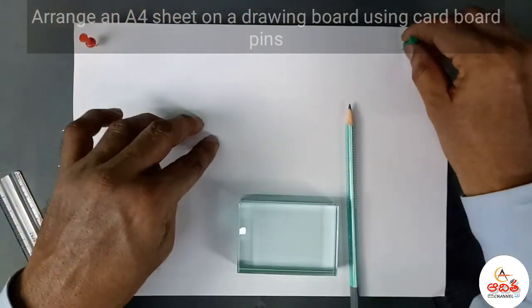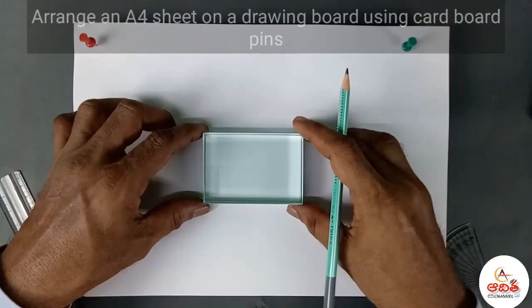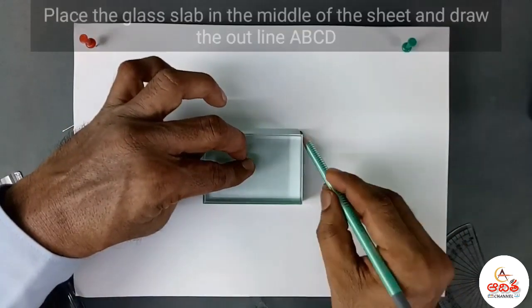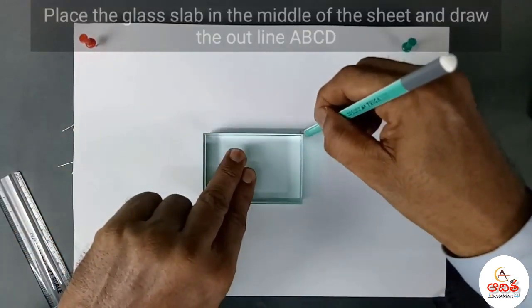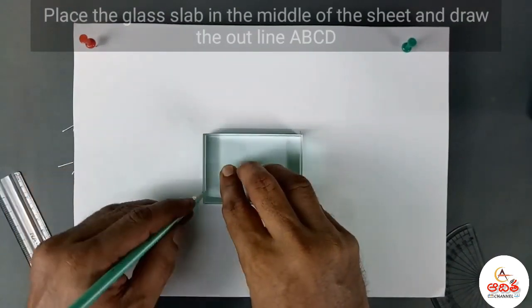Arrange an A4 sheet or a drawing board using cardboard pins. Place the glass slab in the middle of the sheet and draw the outline ABCD.